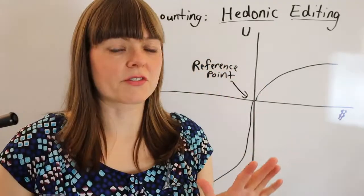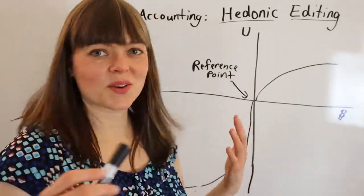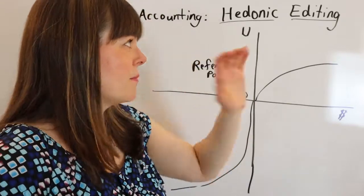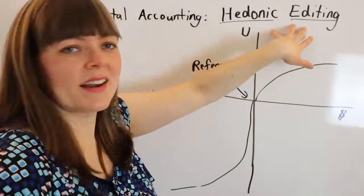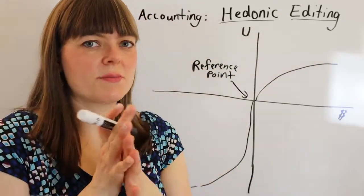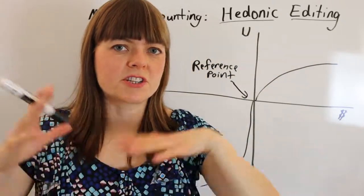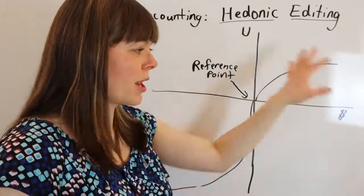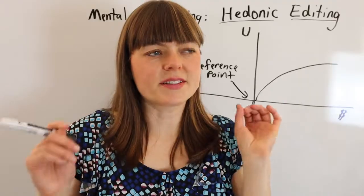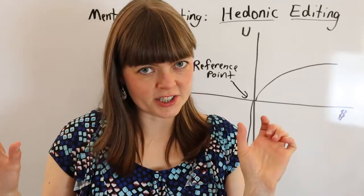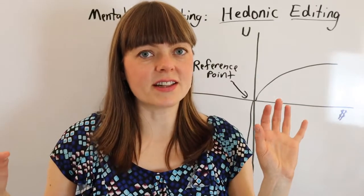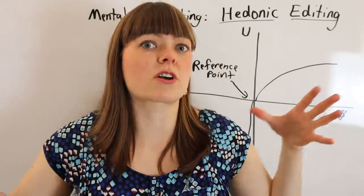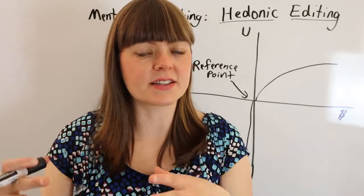That reference point might be expectations or it might be something else. Hedonic editing is where you partition things strategically in order to frame the utility. It's about either partitioning money or partitioning events so that you're separating out certain events or clumping events together.